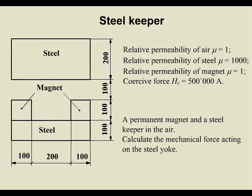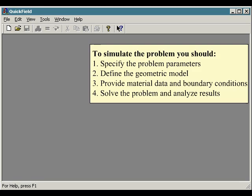There is a permanent magnet and a steel keeper in the air. Calculate the mechanical force acting on the steel yoke. To simulate the problem you should specify the problem parameters, define the geometric model, provide material data and boundary conditions, solve the problem, and analyze results.